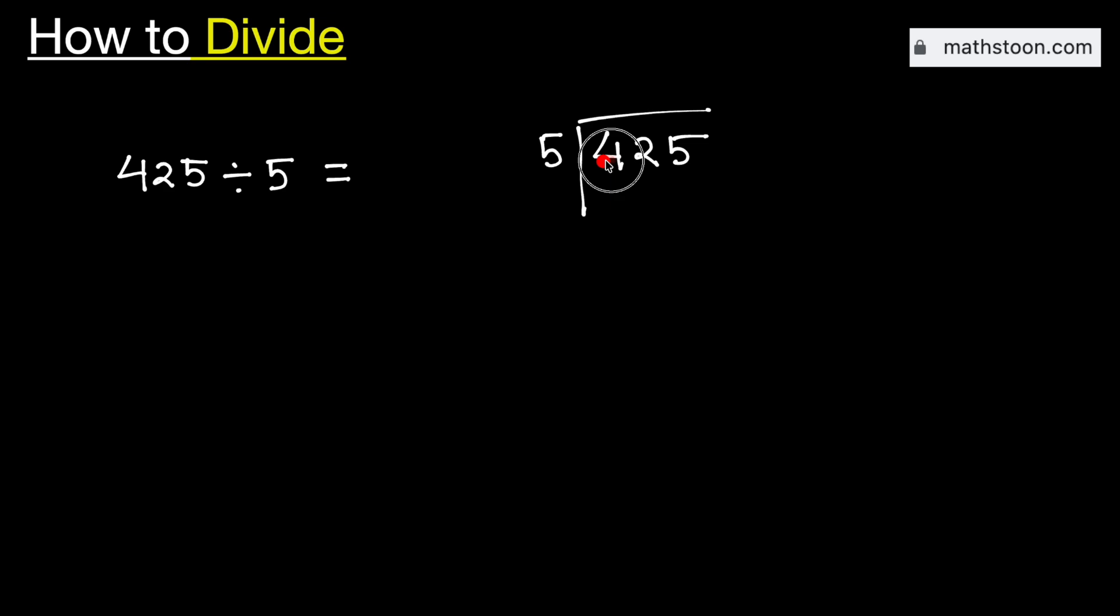Consider the first digit 4. It is less than 5, so we will consider the number 42.